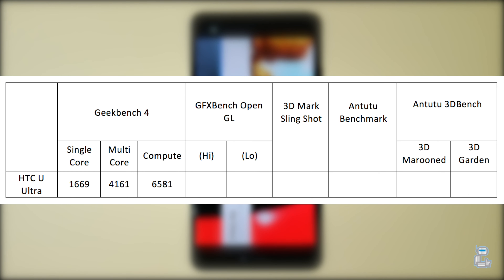In the interest of saving both time and space on the table, I've calculated the average for both the higher and the lower level scenes. The results I got for the higher level graphically intensive scenes was 30.33 frames per second, whereas for the lower graphically intensive scenes I calculated an average of around 38.83 frames per second. You can pause the video to double-check the averages.